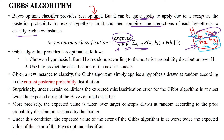Instead of selecting all the hypotheses, the Gibbs algorithm will select only one hypothesis randomly, according to the posterior probability distribution over the hypothesis space H. That single randomly selected hypothesis is then used to predict the new test data class.